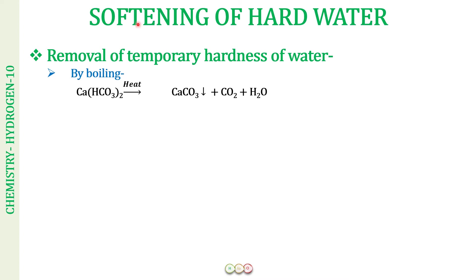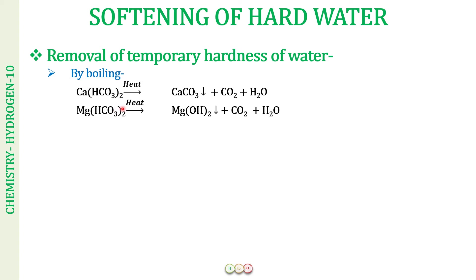When we boil water containing calcium bicarbonate, it converts into calcium carbonate, carbon dioxide, and water. Carbon dioxide escapes into the air and calcium carbonate forms a white precipitate, insoluble in water, which can be removed by filtration. For magnesium bicarbonate, boiling produces magnesium hydroxide, carbon dioxide, and water. Again, carbon dioxide escapes and magnesium hydroxide forms a white precipitate removable by filtration. Note: magnesium forms magnesium hydroxide rather than magnesium carbonate because the solubility product of magnesium hydroxide is less than that of magnesium carbonate.